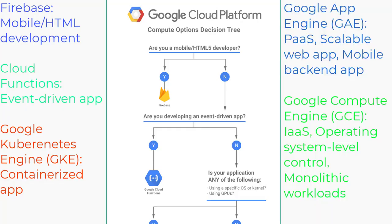The decision tree starts with the question: are you developing a mobile or HTML app? If so, choose Firebase. Otherwise, if you are developing an event-driven app, then choose Cloud Functions.